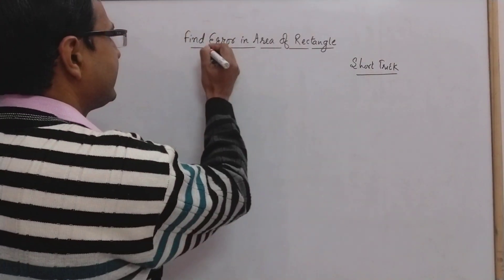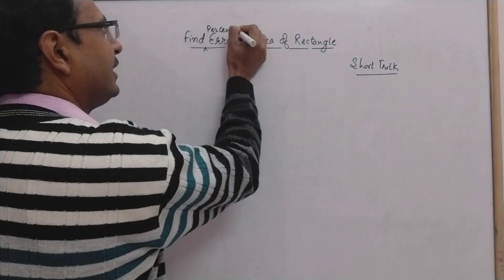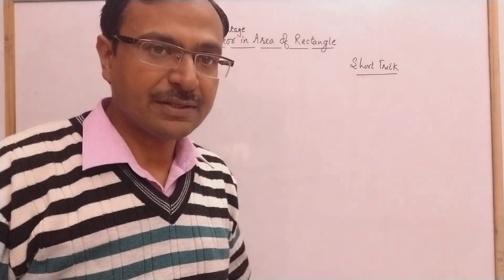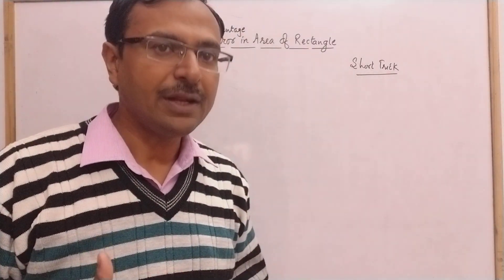When I'm talking of error, this is actually the percentage error in the area of a rectangle, obviously if its length and breadth are taken in excess or in deficit.